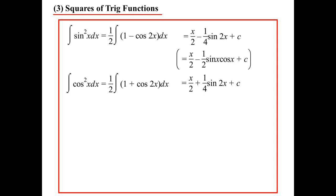So what I'm saying is, this top one could be x on 2 minus a half sine x cos x, and the second one I could have written as x on 2 plus a half cos x sine x.